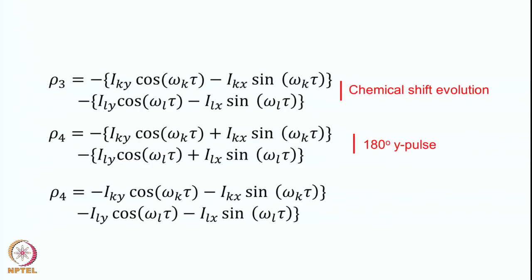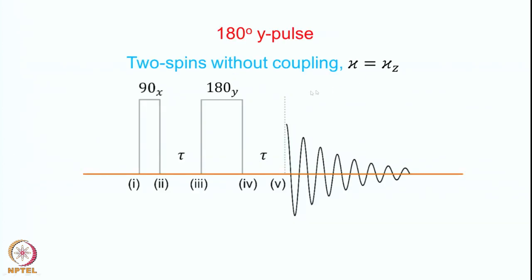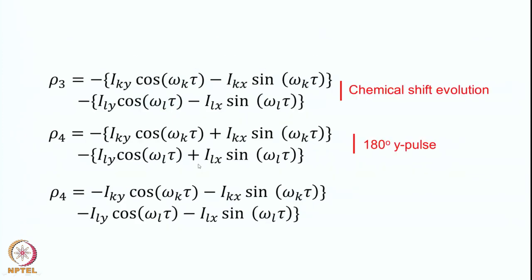We have calculated explicitly the density operator in the previous case, and the difference here is only at this point. Up till here the calculation is the same; therefore we will not repeat it but simply take what was the density operator from the previous class. At this point, rho3 is: minus Iky minus, inside bracket, Iky cosine(omega_k tau) minus Ikx sin(omega_k tau), and the corresponding L-spin terms. This was the result of chemical shift evolution from rho2 to rho3, with individual frequencies omega_k and omega_l for the two spins.